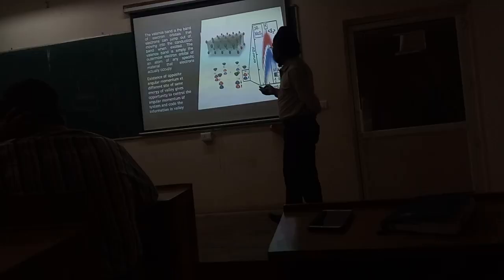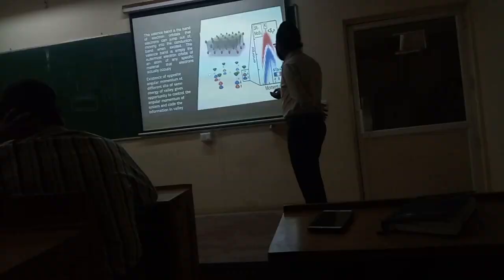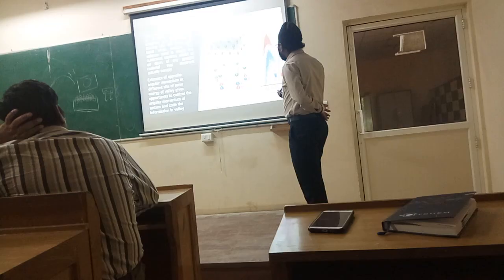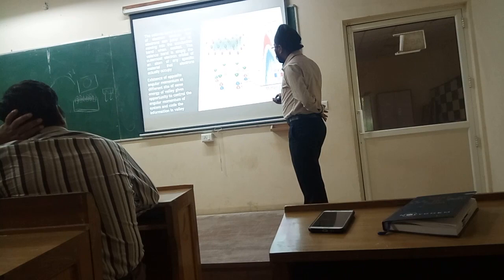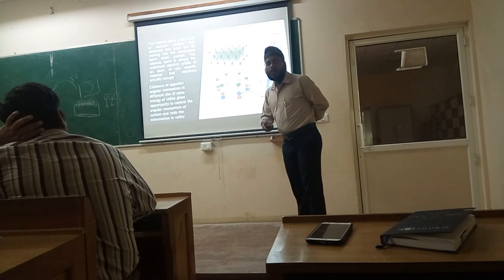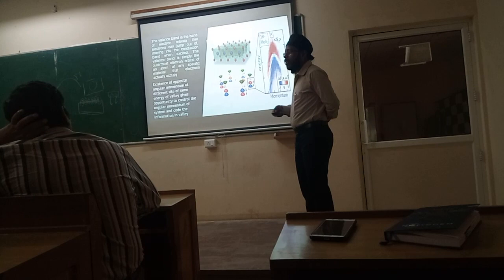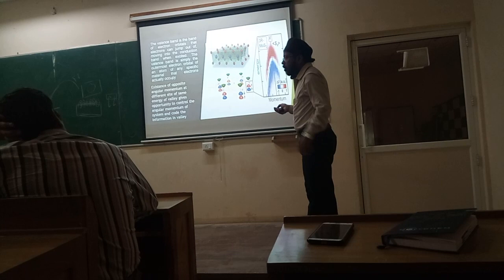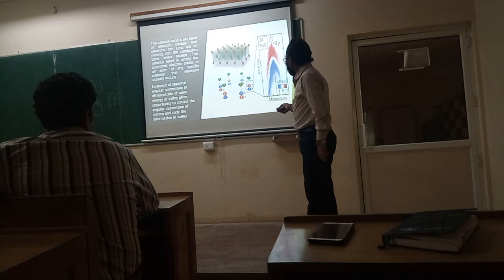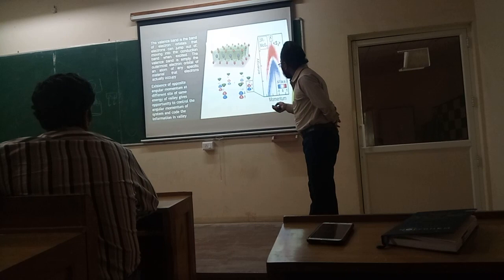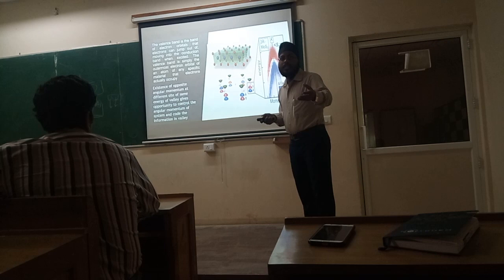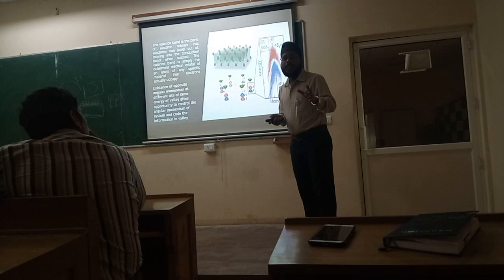Here we can see this structure related to the Brillouin zone. These are all the sides of the Brillouin zone. This axis is the side of energy. Suppose here it is minus k and here it is k — the momentum space. This k refers to the k momentum, and minus k refers to the minus k momentum. These two spaces — this energy state and this energy state — both places have the same valley, same energy. But the property that is different is momentum — that is angular momentum. So, when we are controlling this angular momentum to fabricate a device, this is called valleytronics. The existence of opposite angular momentum at different sides of the same energy of the valley gives an opportunity to control the angular momentum of the system and encode the information in the valley.